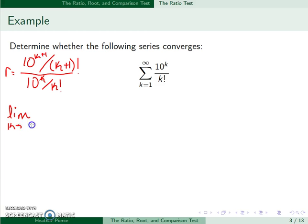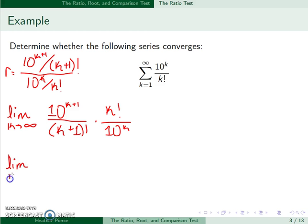So we're looking at the limit as k goes to infinity of 10 to the k plus 1 over k plus 1 factorial times k factorial over 10 to the k. And as we simplify this, we know that we subtract exponents whenever we divide. So we have k plus 1 minus k, which is just 1.